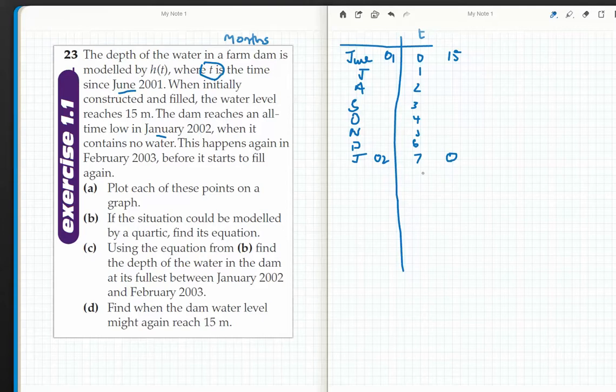It happens when it has no water. This happens again in February 03. So January 03 will be 7 plus 12, which is 19. So February 03 is going to be 20, and that's going to be zero again.